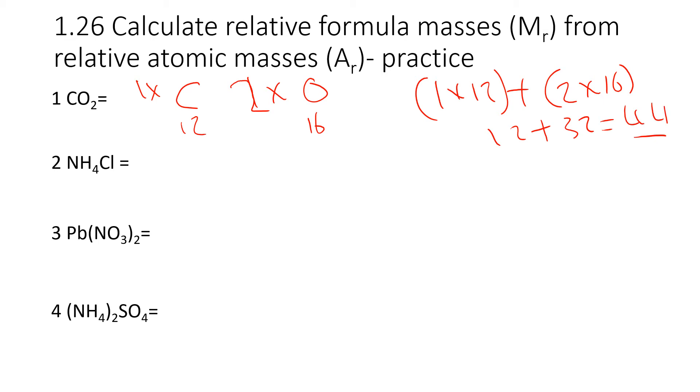So the next one, NH4Cl. We have N and we have one of those. We have H and we have 4. And we have Cl, which we have one of. The mass of N is 14. The mass of hydrogen is 1. And the mass of chlorine is 35.5. When you add this up, you end up with 53.5.